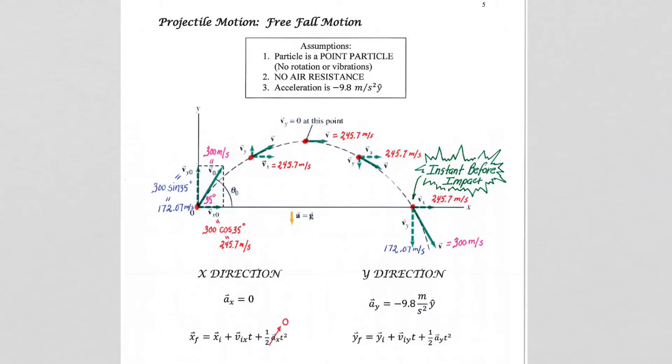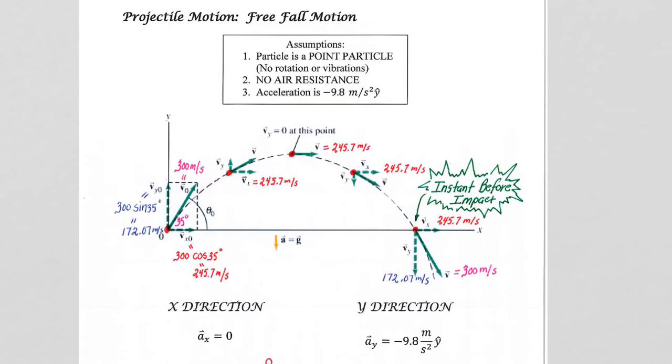We're now going to look at projectile motion. Let's start with our assumptions. We are assuming that we are working with a point particle. So there's no spatial extent to this particle, so there's no possibility for the particle to rotate or to vibrate.